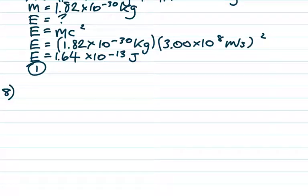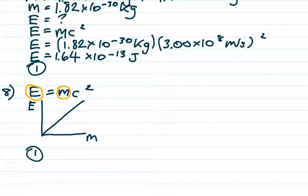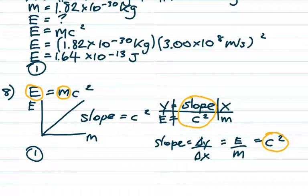Number 8: we have a graph of energy versus mass. Since E equals mc squared, energy and mass are directly proportional, so the graph is a straight line through the origin — that's choice 1. The physical significance of the slope of that line is c squared. You can see this two ways: fitting E equals mc squared to y equals slope times x, the slope is c squared; or slope equals rise over run — energy over mass — which by E equals mc squared equals c squared. So either way, the slope of that line is c squared.